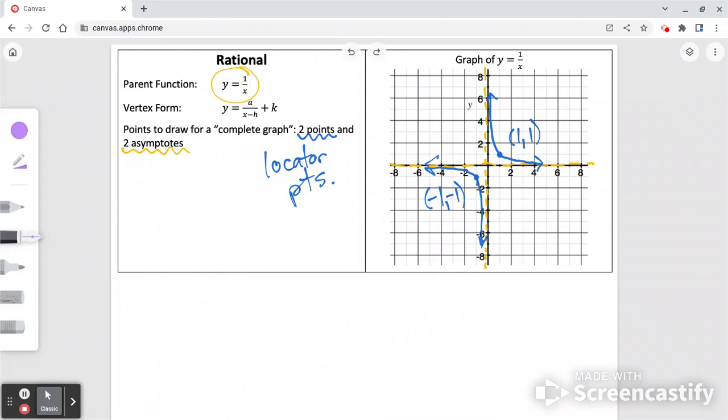Something I want you to notice to keep in mind for when we transform this graph in a second. Right from where these asymptotes cross, our locator point is over 1, up 1. Our other locator point is over 1, down 1. So that relative position will be the same no matter where the asymptotes go.